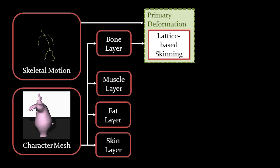In each frame, primary deformation, which is also known as skinning, is performed on the voxels belonging to the bone layer with the skeletal motion.